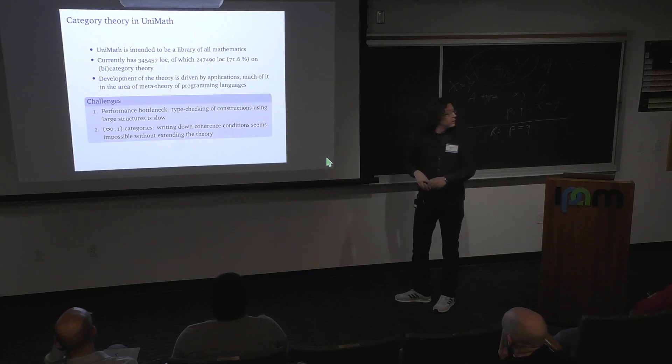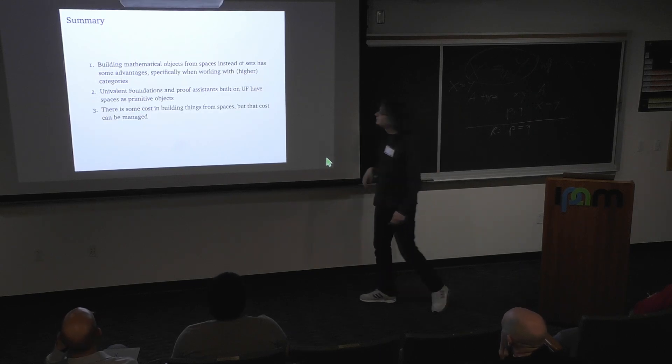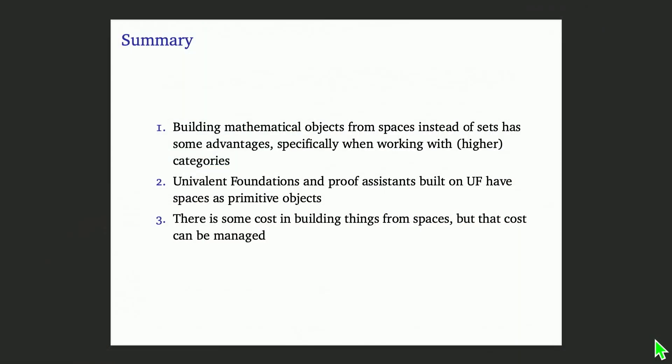In summary: building mathematical objects from spaces instead of sets has advantages, specifically when working with higher categories. Univalent foundations and proof assistants built on univalent foundations have spaces as primitive objects, and I believe univalent foundations can serve as a domain-specific formalized foundation for category theory and higher category theory. There is some cost in building things from spaces — one has to show the completeness condition — but that cost can be managed rather efficiently in a computer proof assistant. Thank you.